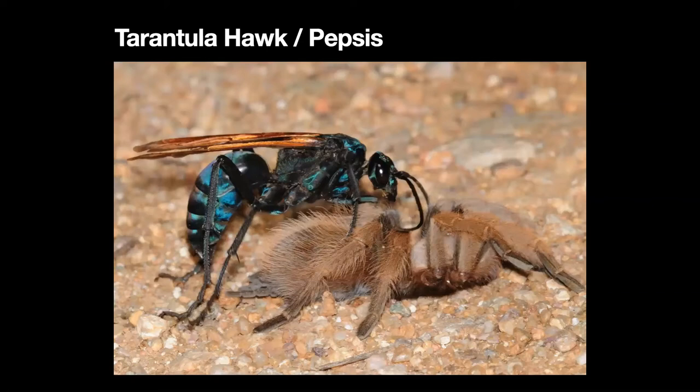Here we all know the tarantula hawks, Pepsis species. All the large tarantula hawks are Pepsis species. Here it is with the tarantula — I have another picture where you can actually see the wasp sting the tarantula.